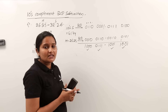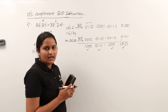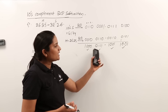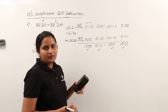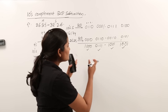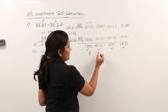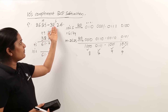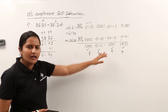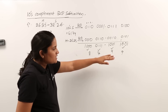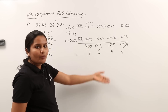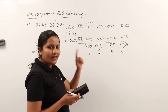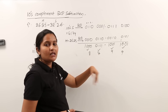In any complement subtraction process, if a carry is generated you discard it and get the result. But if no carry is generated, you must treat the result as negative and it is in complemented form. Here we have no end-around carry, so the result 87.99 is not the actual answer — it is in complemented form. Do not mistake this as the actual result.